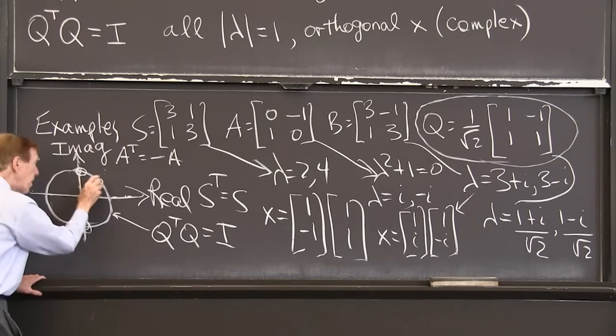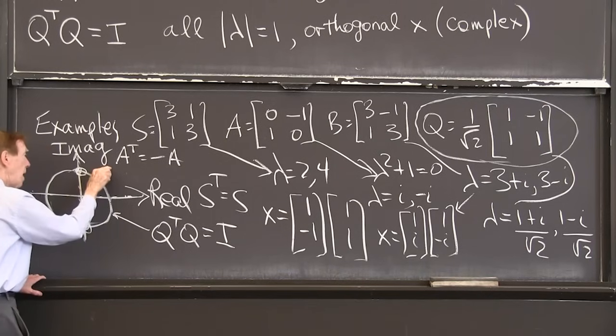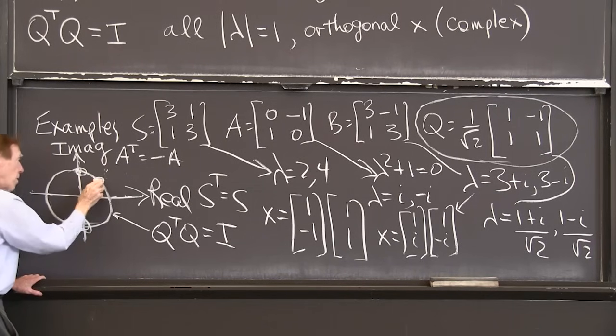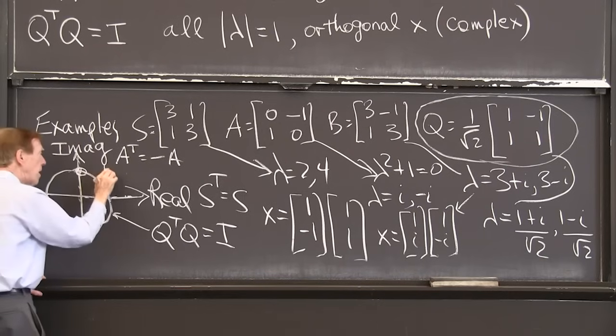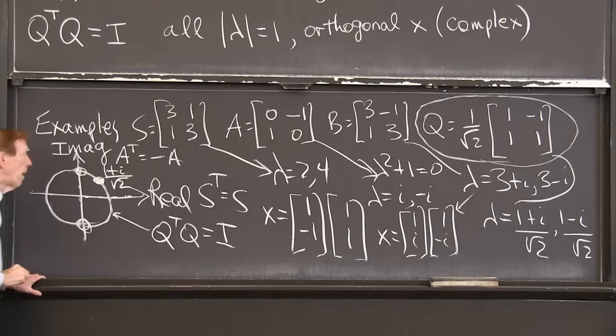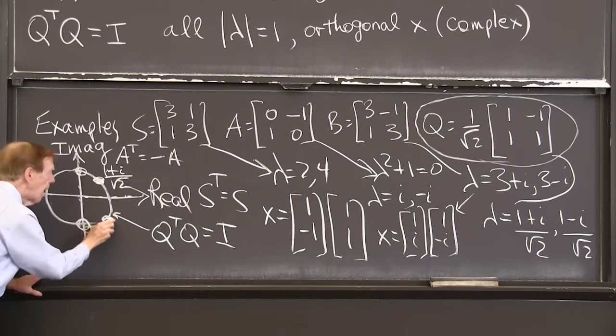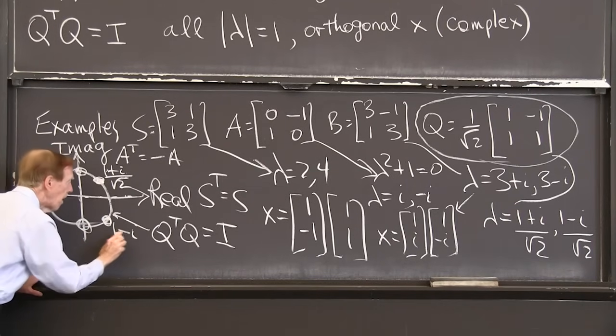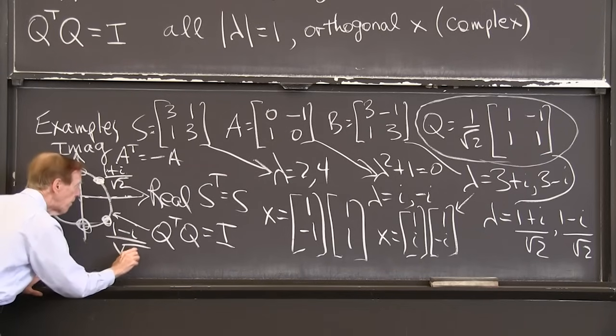And those numbers lambda, you recognize that when you see that number, that is on the unit circle. Where is it on the unit circle? 1 plus i over square root of 2. Square root of 2 brings it down there. There's 1, there's i. Divide by square root of 2, that puts us on the circle. That's 1 plus i over square root of 2, and here's 1 minus i over square root of 2.